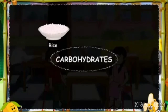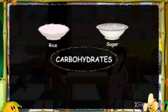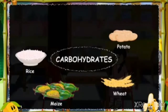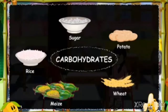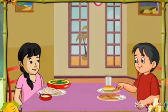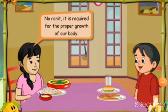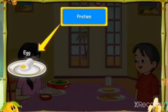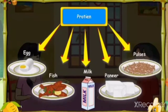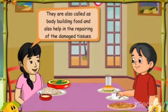Sources of carbohydrate are rice, sugar, wheat, maize, and potatoes — they provide energy for doing different activities. Proteins are required for proper growth. Sources of protein are egg, fish, milk, paneer, and pulses, and are also called body-building food.